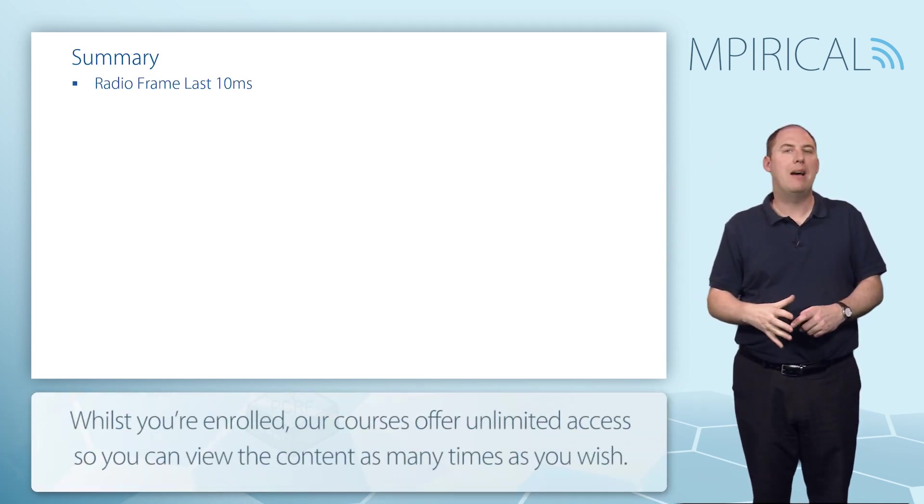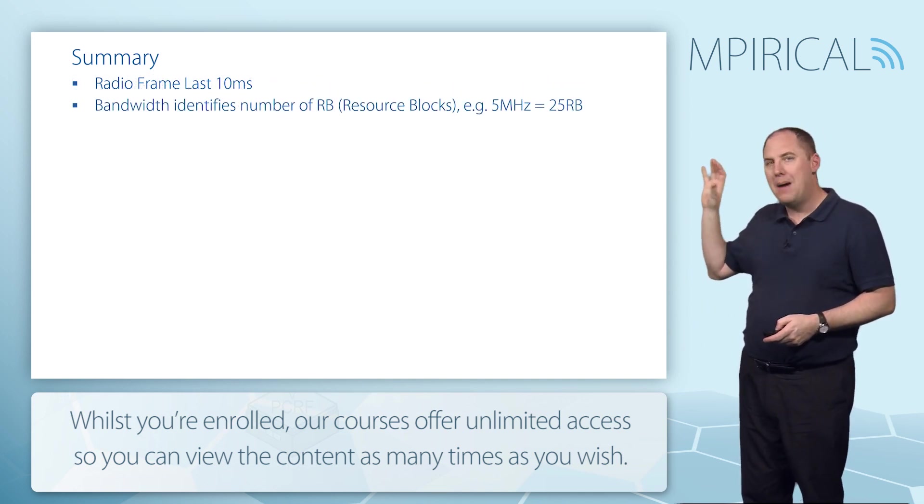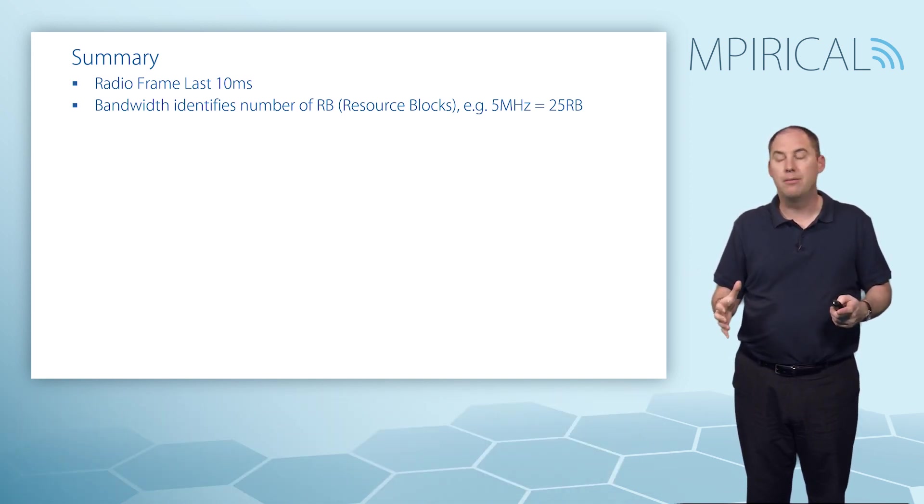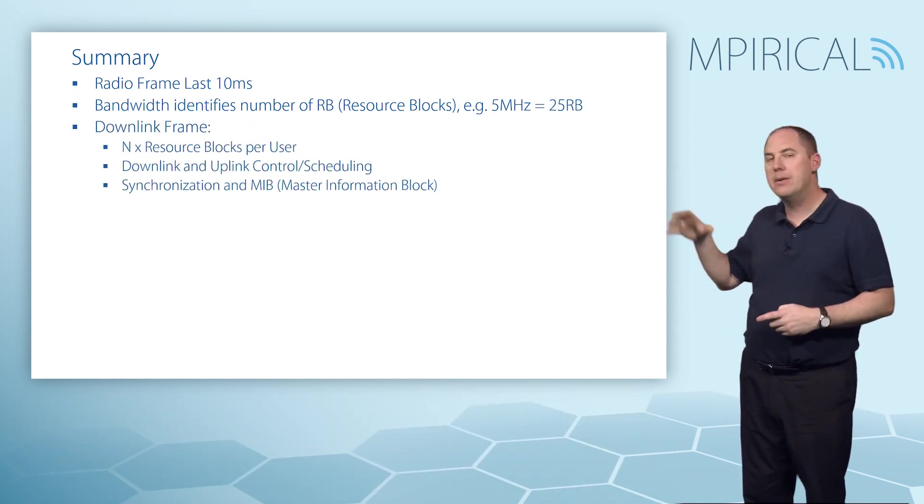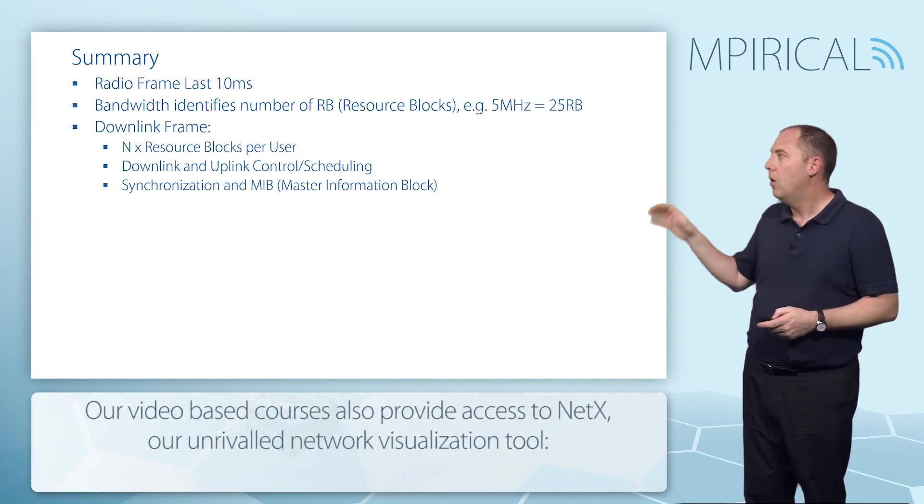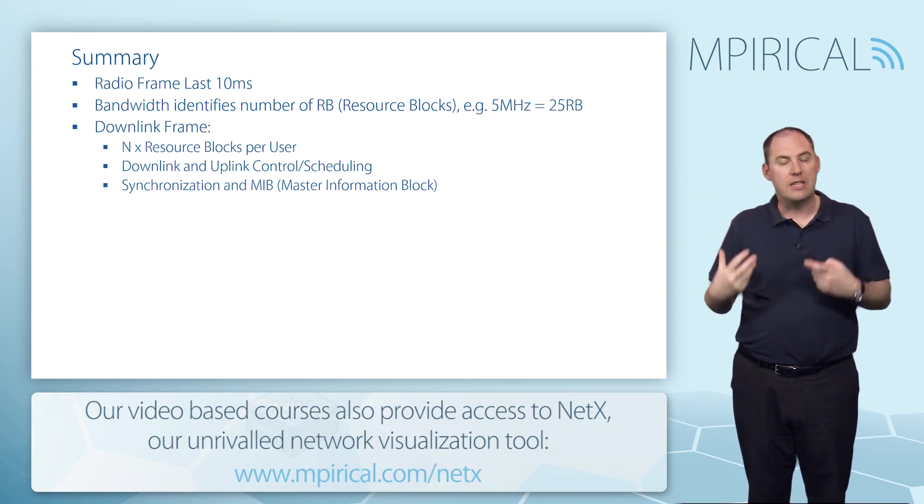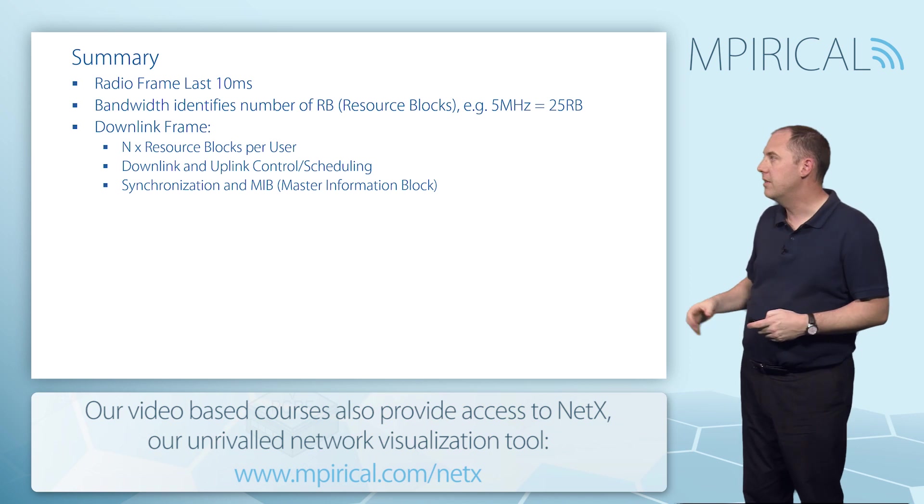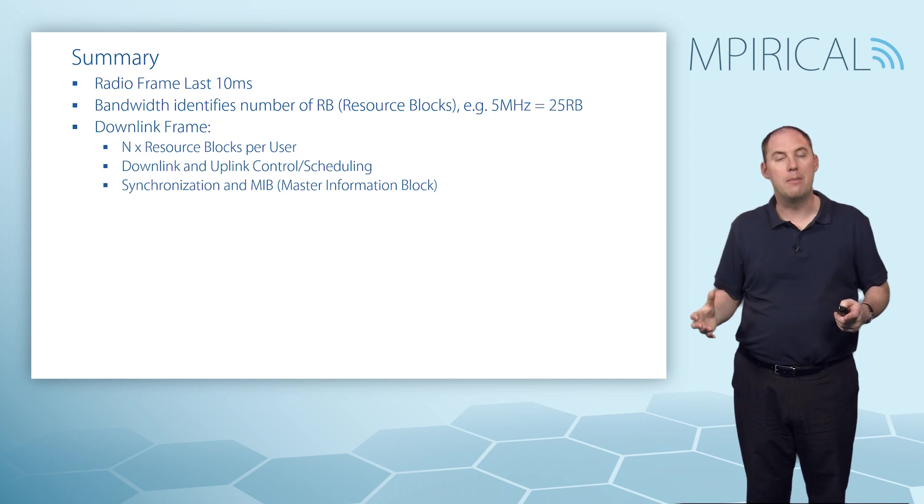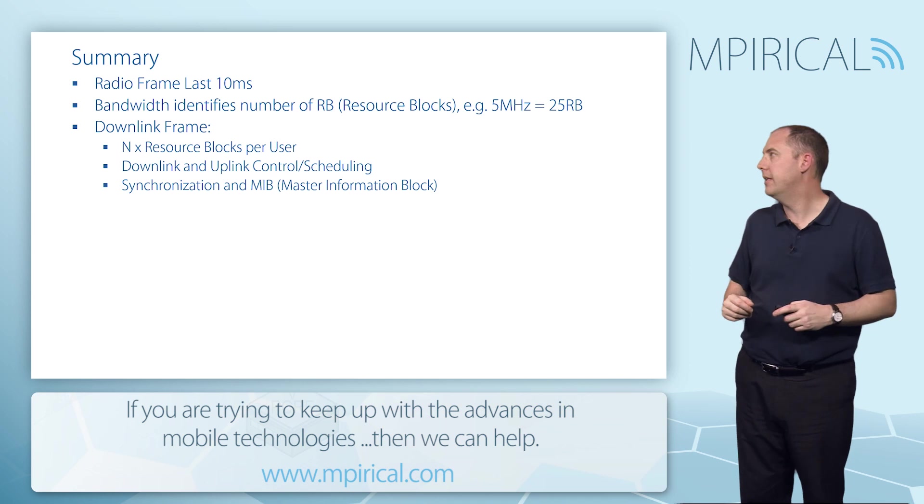In summary, we've identified that we have a radio frame. It lasts 10 milliseconds. The bandwidth, 5 megahertz, 10 megahertz, 15, denotes the amount of resource blocks you're going to have. In the downlink frame, we're going to allocate users a number of these resource blocks. We're going to use scheduling, the control scheduling, to schedule downlink as well as uplink resources. There's also synchronization and the master information block that we expect to see in the downlink frame. I will point out there are other detail aspects of the frame that we'll get to in other videos.